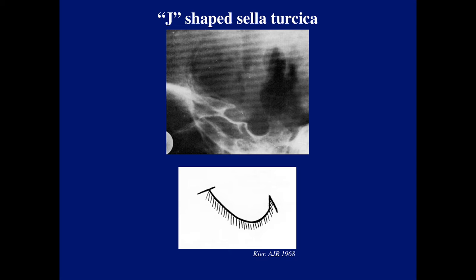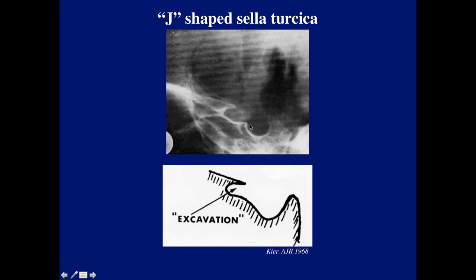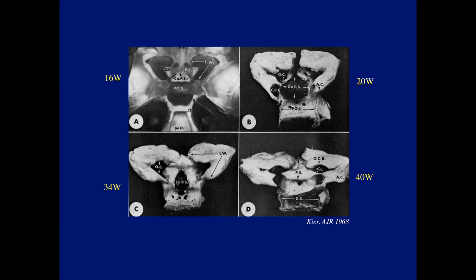Another issue which was much more serious when I was a resident was the so-called J-shaped sella. People thought this sella looked like a letter J lying on its side, meaning there was excavation anterior to the sella, usually by a tumor of the optic nerves like an optic nerve glioma. Children who had visual symptoms were then subjected to pneumoencephalography, which was quite dangerous — requiring anesthesia, injection of oxygen or air, and was not a simple study. When I looked at these, I didn't think that they were particularly abnormal.